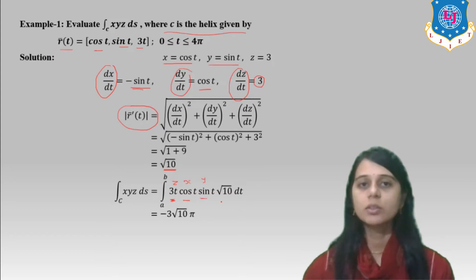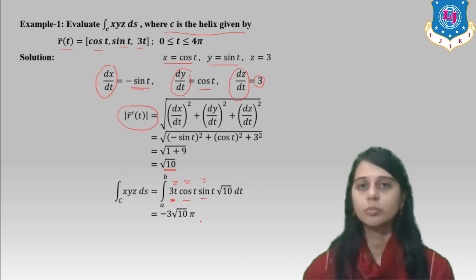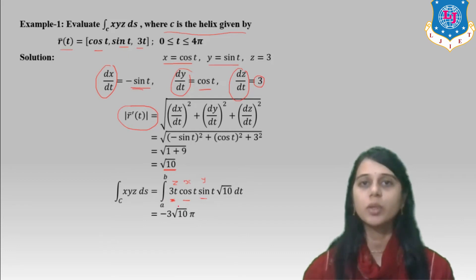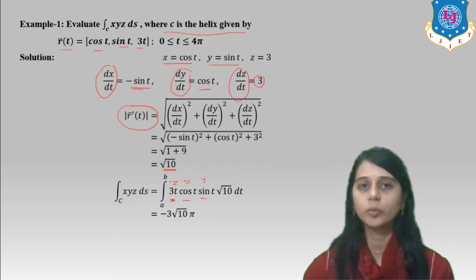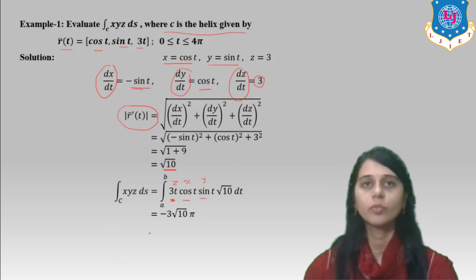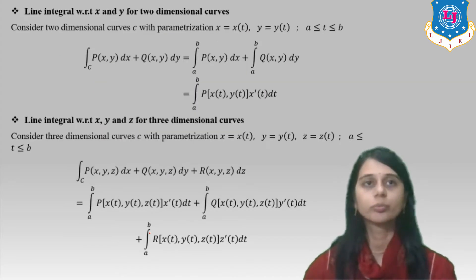We are integrating this from a to b, where a = 0 and b = 4π. After evaluating, we get the answer −3√10 π. This is the answer of the line integral.